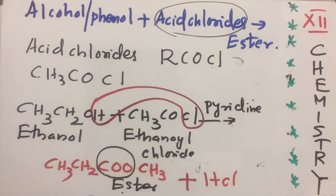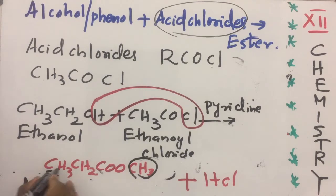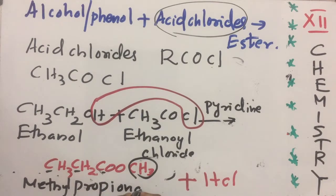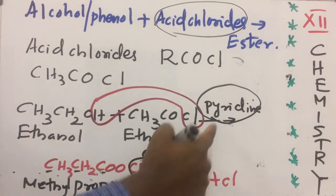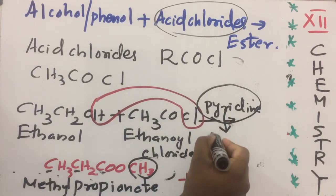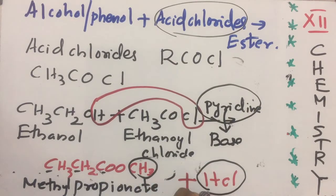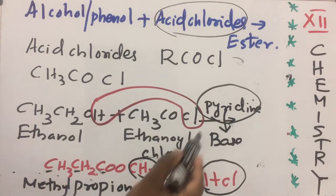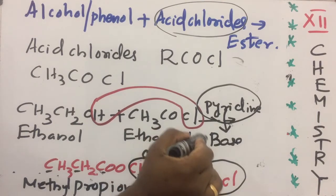The byproduct is HCl. What is the IUPAC name of this ester? CH3 is methyl, and there are 3 carbons, so it is methyl propanoate. And here we have the compound pyridine. What is the role of pyridine? Pyridine is a base, used to neutralize the excess acid produced in the esterification reaction.